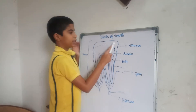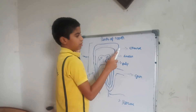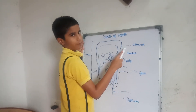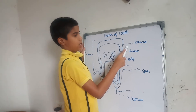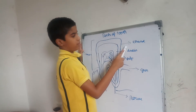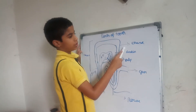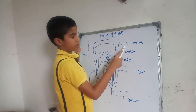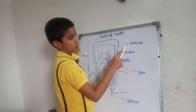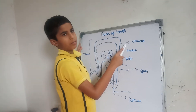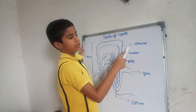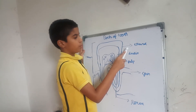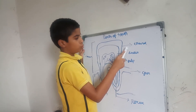This is the enamel. The crown of each tooth is covered by the enamel. It is the hardest substance in the human body. The enamel protects the inside parts of the tooth.